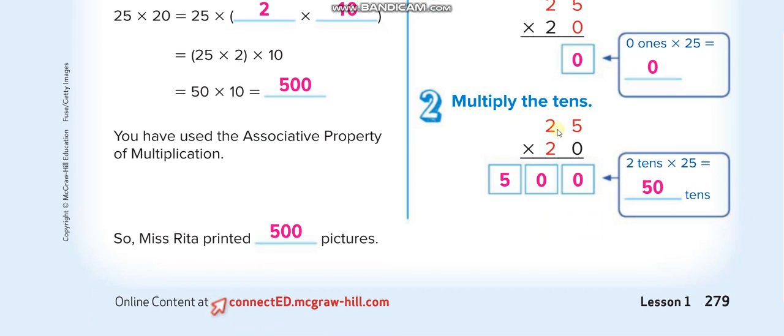Now what is the actual way we are using when we multiply the 2 digits number? I will show you now. See this, guys? 25 times 20.